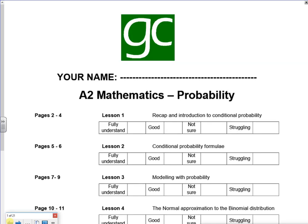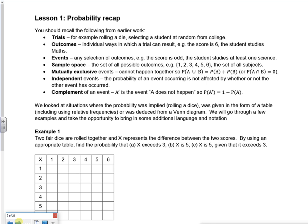Last pack for your A-level on the stats side, the probability pack. We know stuff from last year: trials is the number of times you do something, outcomes are the individual ways, an event is what you're selecting, sample space is the set of all possible outcomes. We know that mutually exclusive events can't happen together, there is no overlap. Independent events happen if they're not affected by each other, and the complement is it not happening.